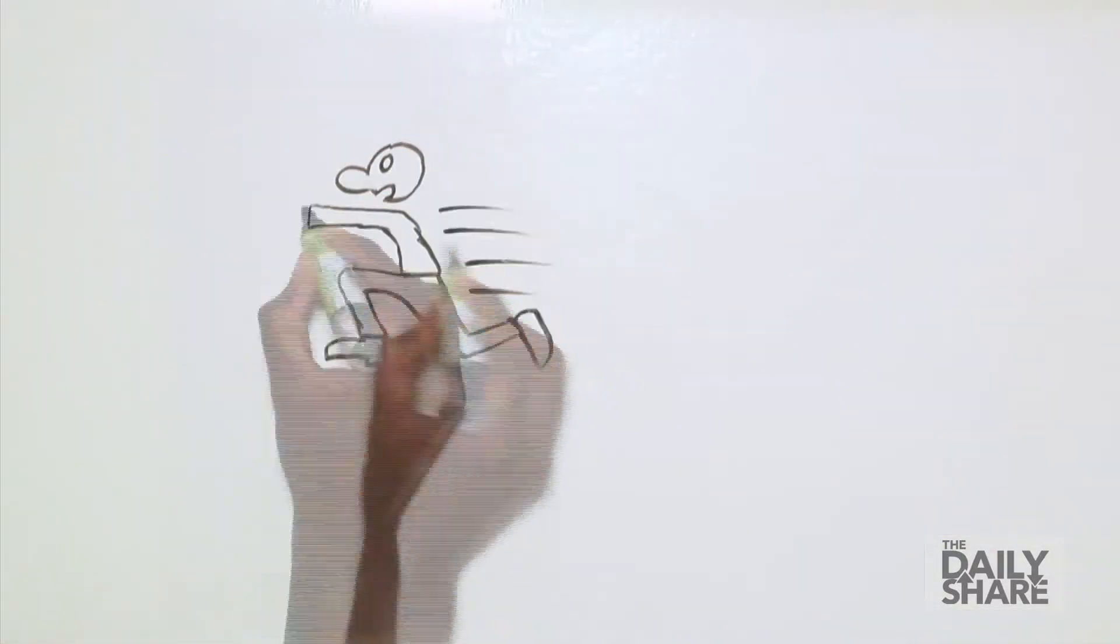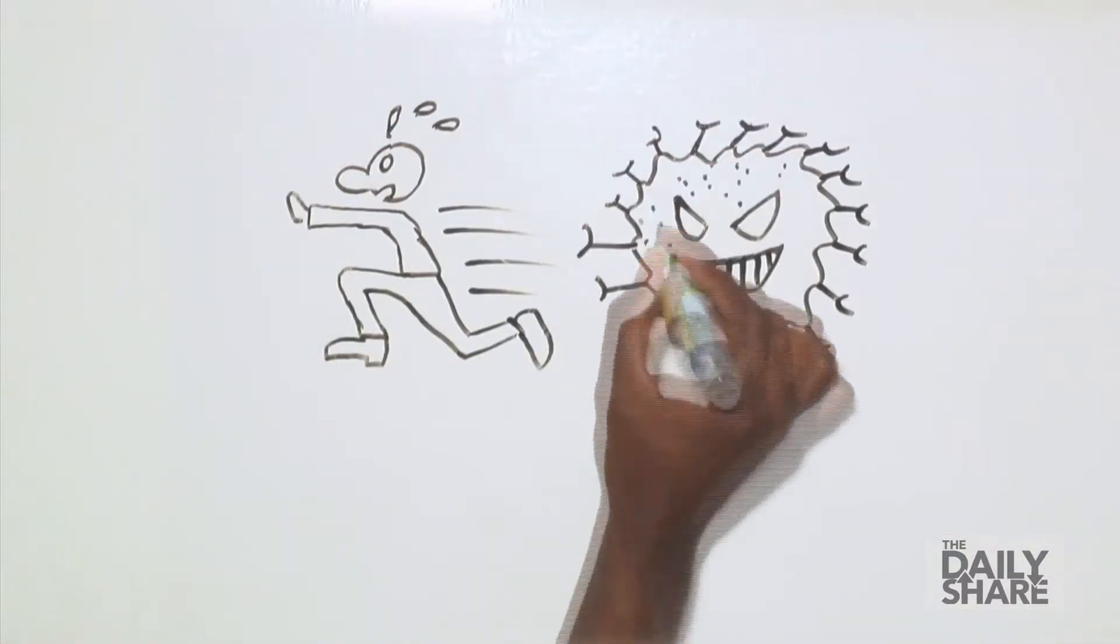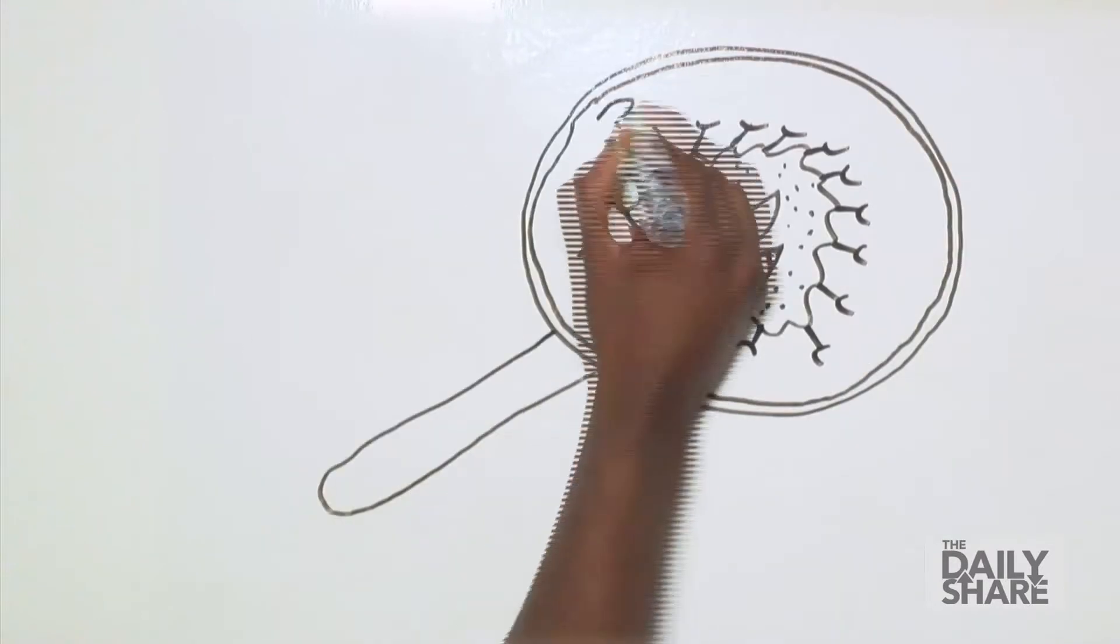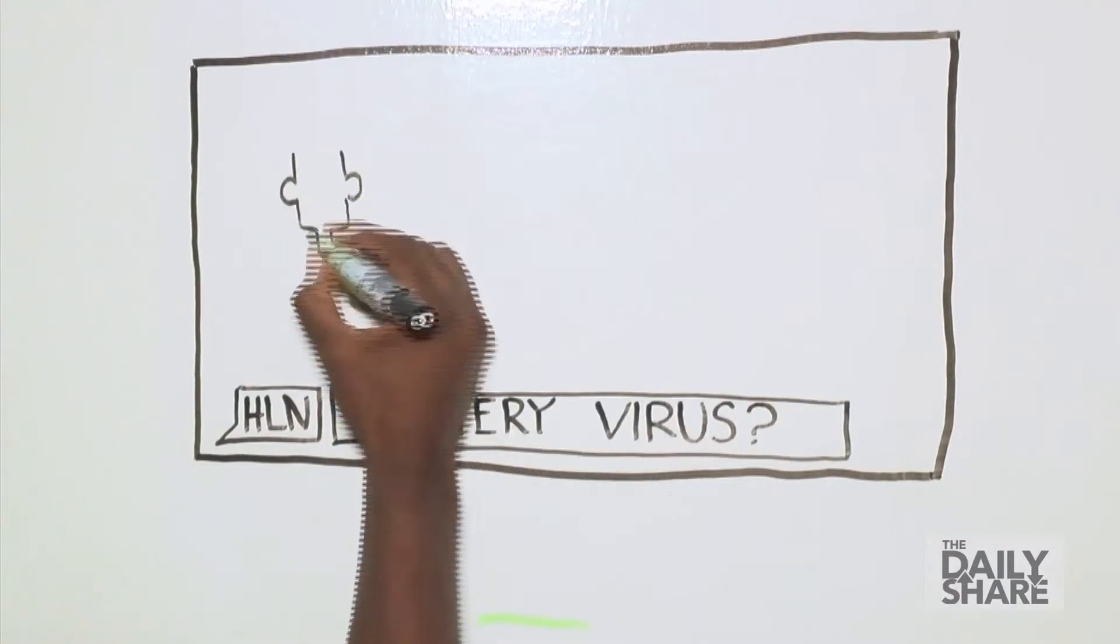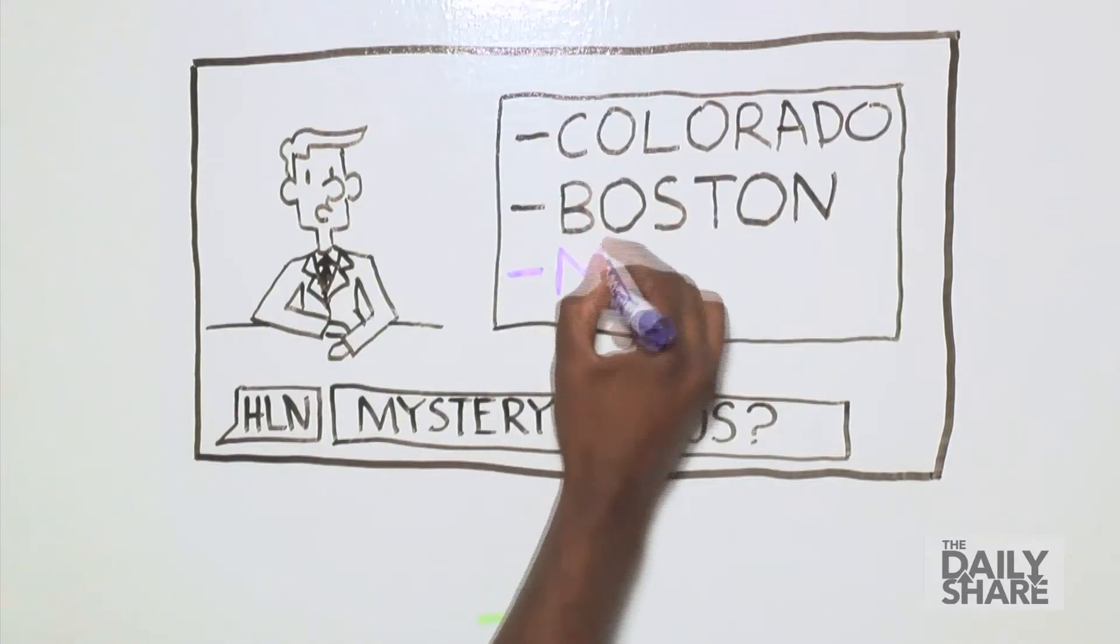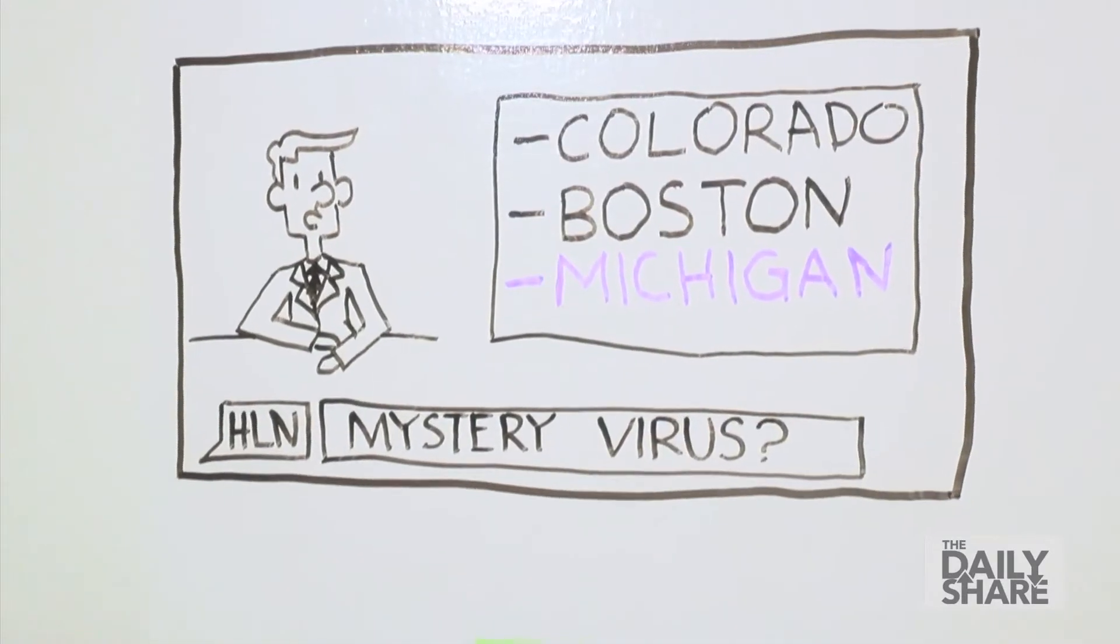And here's the scary part. Enterovirus may also be linked to a small number of cases of a mysterious neurological illness. This was reported in Colorado, Boston, and Michigan. One child in Michigan even developed partial paralysis.